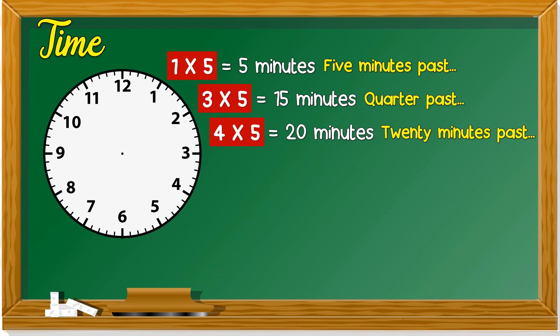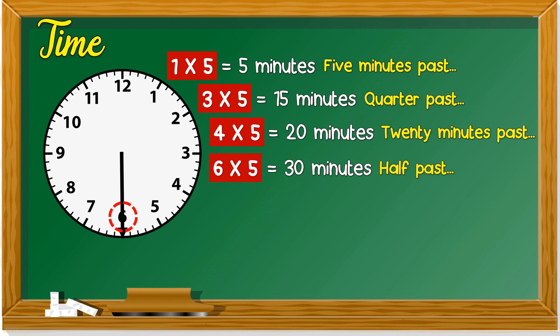When the minute hand is at 6, we get 6 times 5. How much is 6 times 5? If you don't remember, you need to revise your multiplication of 5: 5, 10, 15, 20, 25, 30. So it's 30 minutes, or we can say 'half past' because it's already half of the clock.